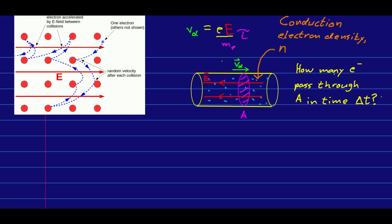Then we want to know how many electrons pass through some cross-section in a time delta t. Well, since we know their speed, then we know that in a time delta t, they're all going to go a distance vd delta t.